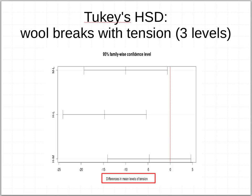Tukey's HSD can also produce a graph that visually repeats what the numbers show. The high-to-medium comparison overlaps with zero, indicating no significant difference in yarn breakage between medium and high tensions. But high-to-low and medium-to-low comparisons are significantly different from each other. So you can do a post-hoc test on a one-way ANOVA readily, but for factorial designs with interactions, these post-hoc tests become limited. That may be why we see fewer of them as we move to more sophisticated experimental designs.